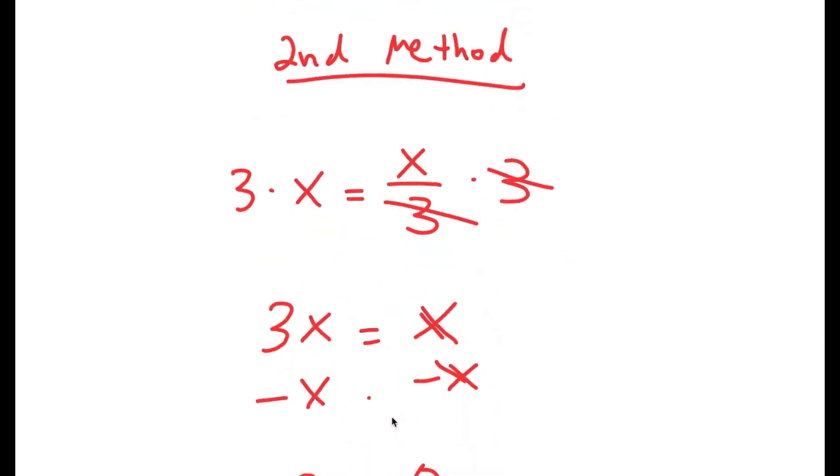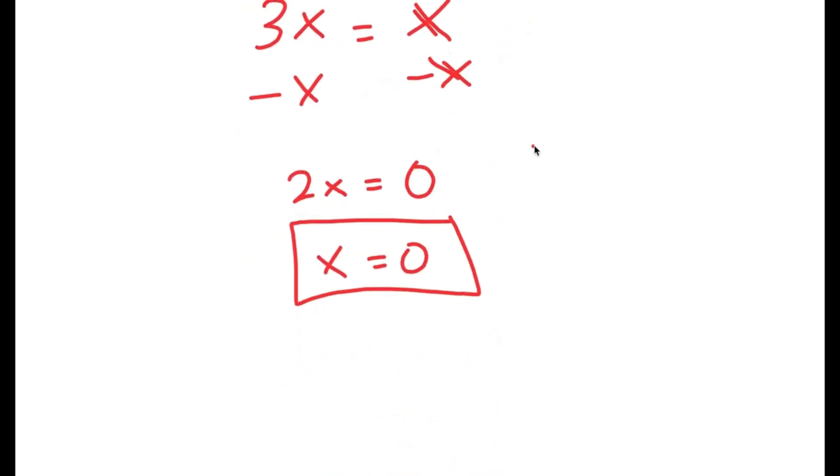So those are two methods of solving this equation. All right, so in this video, I'm going to be solving the equation x to the power of x is equal to x to the power of 2x squared. So to solve this, I'm going to first start by taking the ln on both sides.